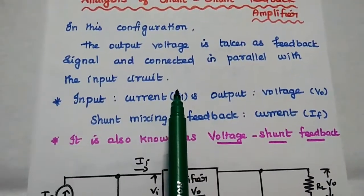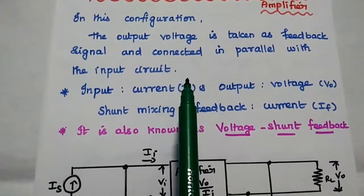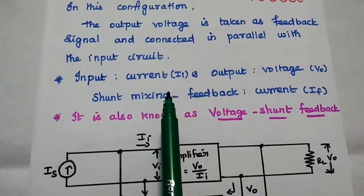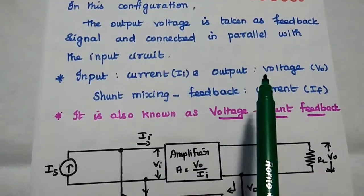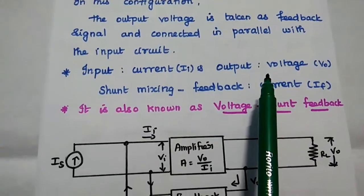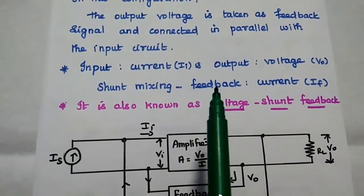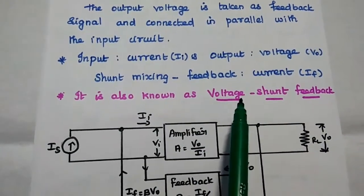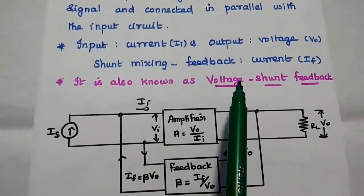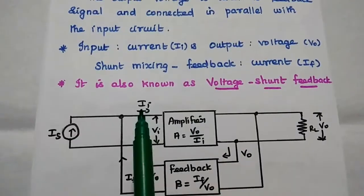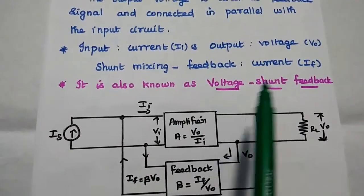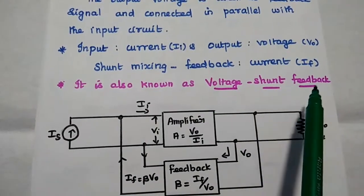For this feedback amplifier, the input is a current signal, the output is a voltage signal, and the feedback signal is a current signal. It is also known as voltage-shunt feedback.